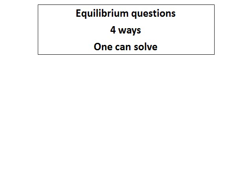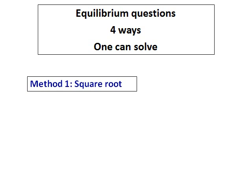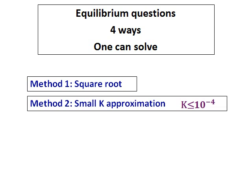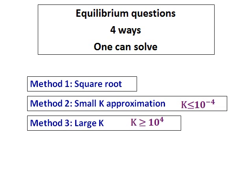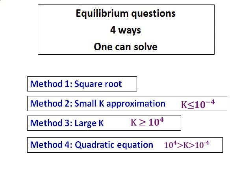There are four ways one can solve an equilibrium question. Method one is the square root method. Method two is the small K approximation, for all those where the K value is less than 10 to the power of negative 4. Method three is the large K approximation where the K value is greater than 10 to the power of 4. For all values in between negative 4 and 4, there is no shortcut — you have to use only the quadratic equation.